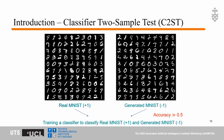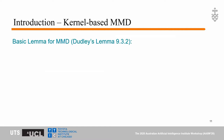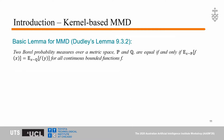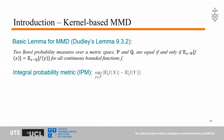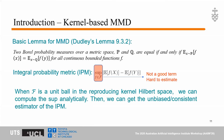Another approach is the kernel-based MMD test. MMD is based on Lemma 9.3.2, which states that two distributions are the same if and only if two expectations are equal for all continuous bounded functions. Based on this lemma, we can define the Integral Probability Metric, IPM. However, in this definition we cannot get a good estimation of the sup-norm. To solve this, we limit the function class F to the unit ball in the Reproducing Kernel Hilbert Space, RKHS. When F is in the unit ball of the RKHS, we can compute the supremum analytically and get an unbiased or consistent estimator of the IPM.